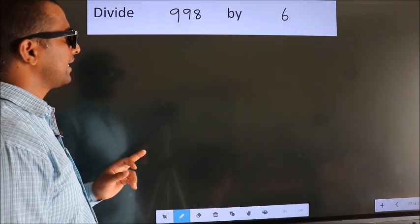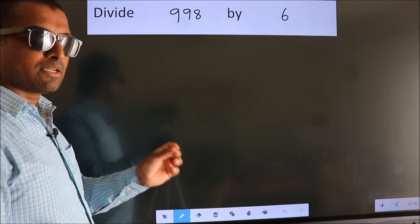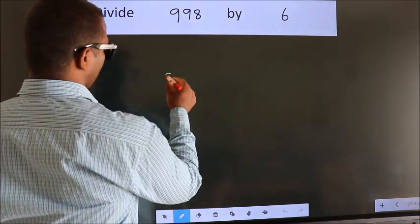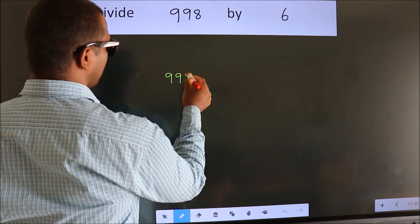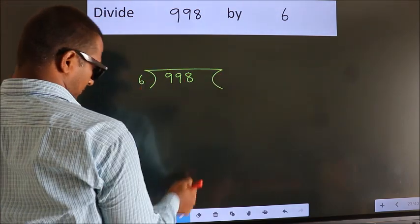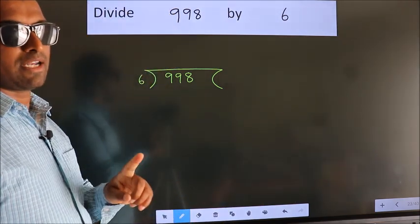Divide 998 by 6. To do this division, we should frame it in this way: 998 here, 6 here. This is your step 1.